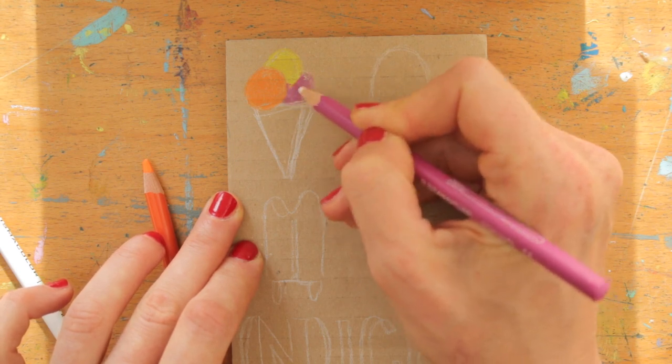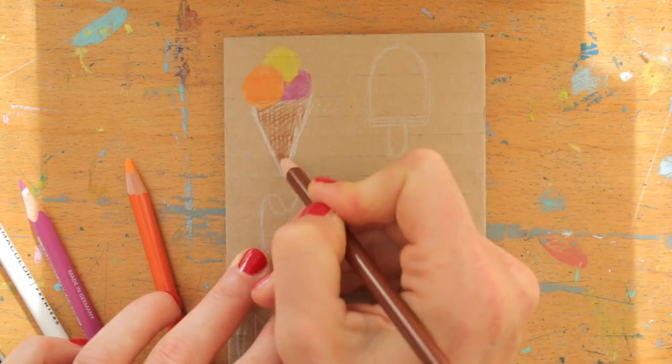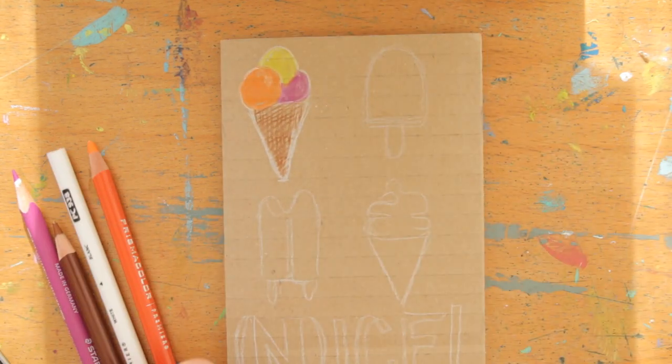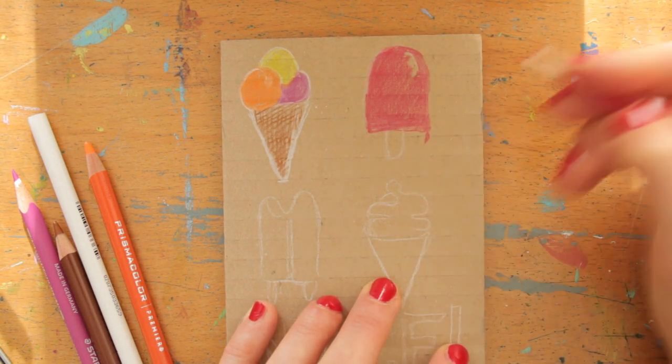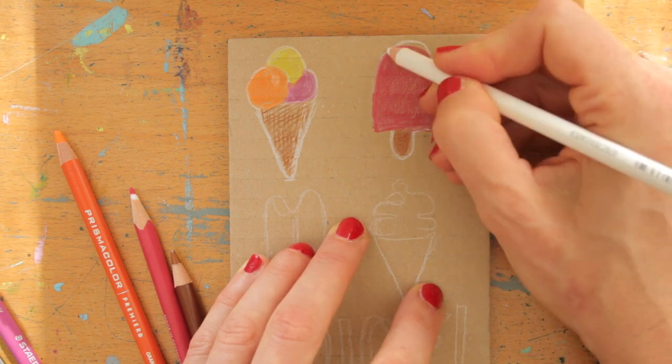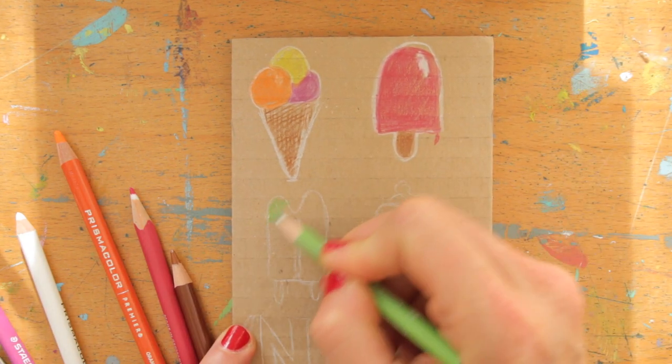Now that I have the layout, I color each shape in, choosing the colors as I go. I also add some white for highlights and shine. I trace the shapes with white to make them pop.